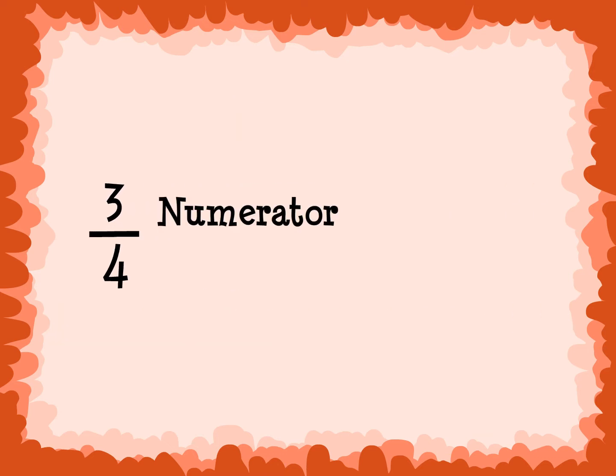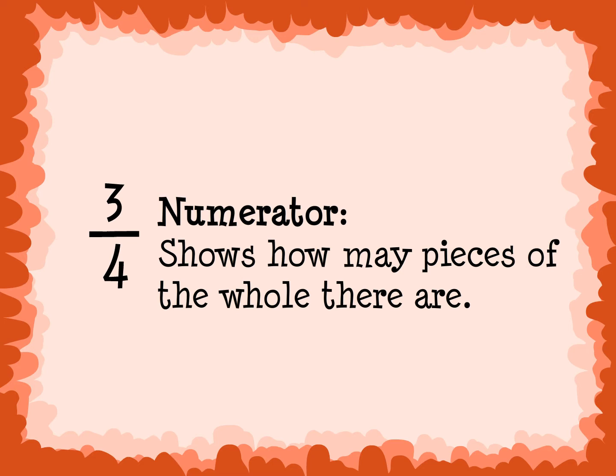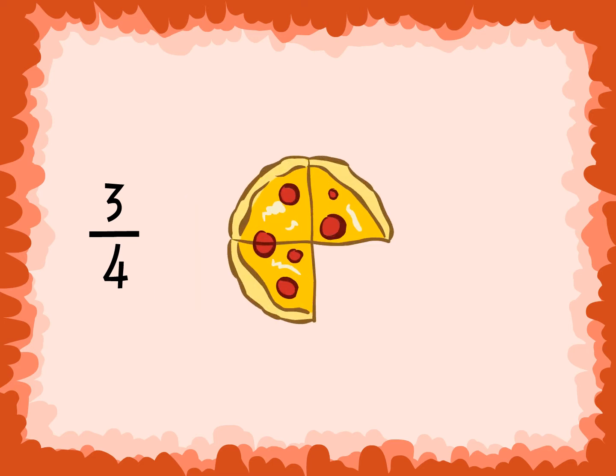The top number in a fraction is called the numerator. The numerator shows how many pieces of the whole there are. The 3 in 3 fourths of a pizza shows that we have 3 of 4 equal pieces of pizza.